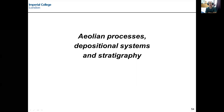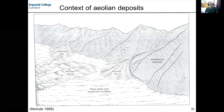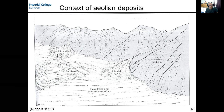What we're going to talk about now - we're still staying at continental environments, but we're going to talk about aeolian processes and deposits. Aeolian refers to wind-blown sand settings. The general context of aeolian deposits: we have a mountain belt, alluvial fans supplying coarse sediment out of those mountain belts, and then when we're in an arid or semi-arid setting, the wind can rework the sandy components from the alluvial fans to generate large dune systems.